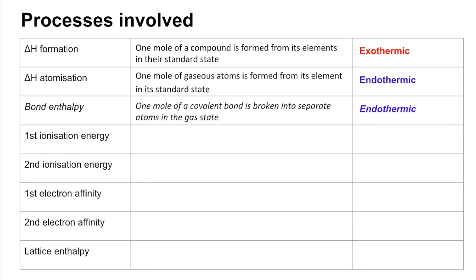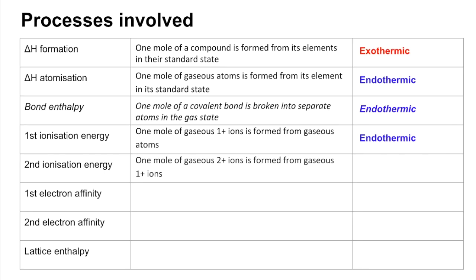First ionization energy is the energy required to create one mole of gaseous 1+ ions from gaseous atoms. That's endothermic because we have to remove an electron from the attraction of the nucleus. Second ionization energy is going from gaseous 1+ ions to gaseous 2+ ions — endothermic again.